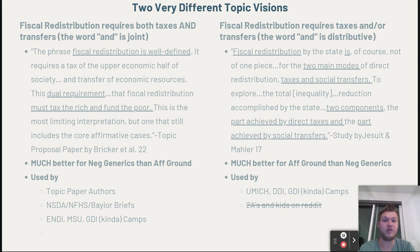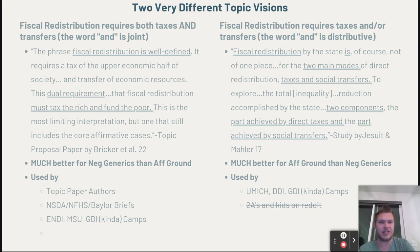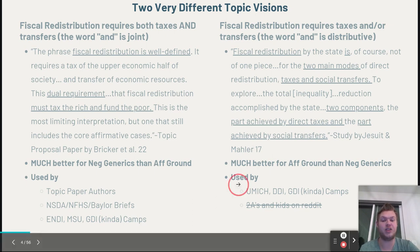The other version of the topic says that the word 'and' is distributive, meaning it requires taxes and/or transfers. Fiscal redistribution would be two modes — two components, part achieved by direct taxes and part achieved by social transfers. This is much better for affirmative ground and is the version used by camps like UMIC, DDI, and GDI, along with second affirmatives and debaters on Reddit. Whereas the other version is used by the topic paper authors, the NSDA, the NFHS, and Baylor briefs, with camps like ND, MSU, and GDI using that definition in their lectures.